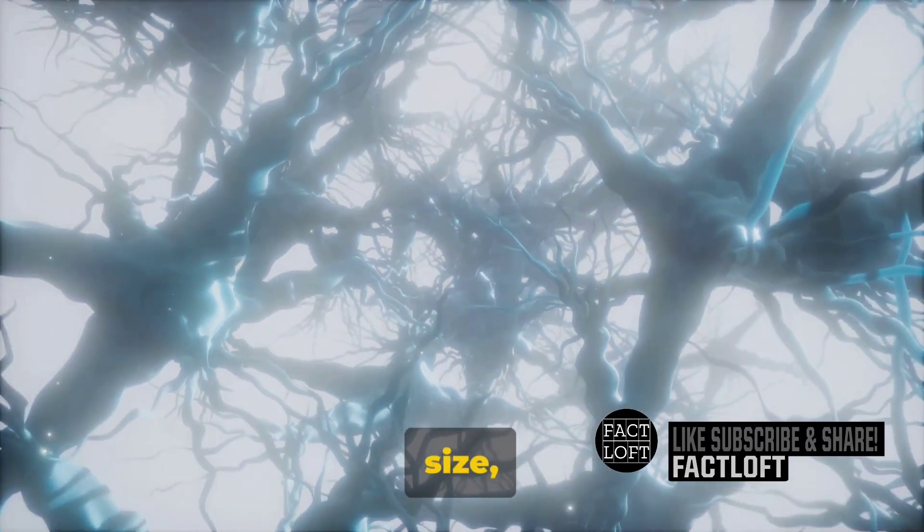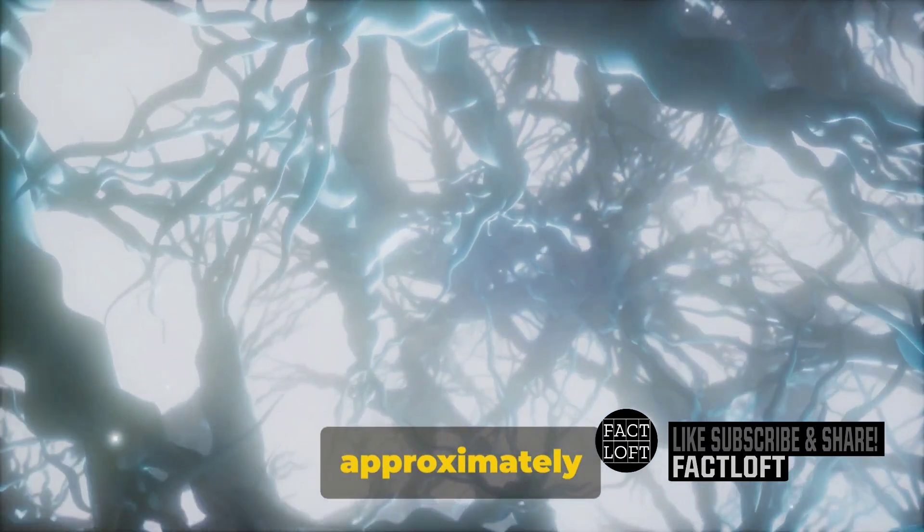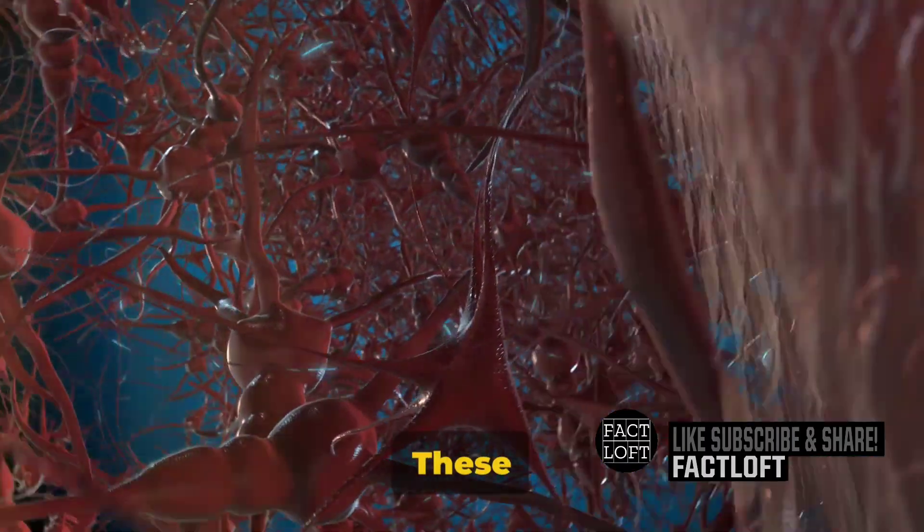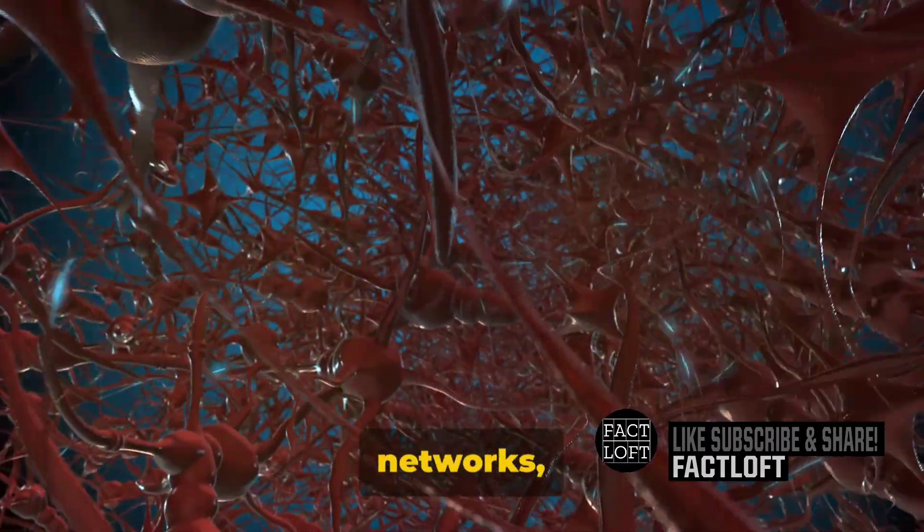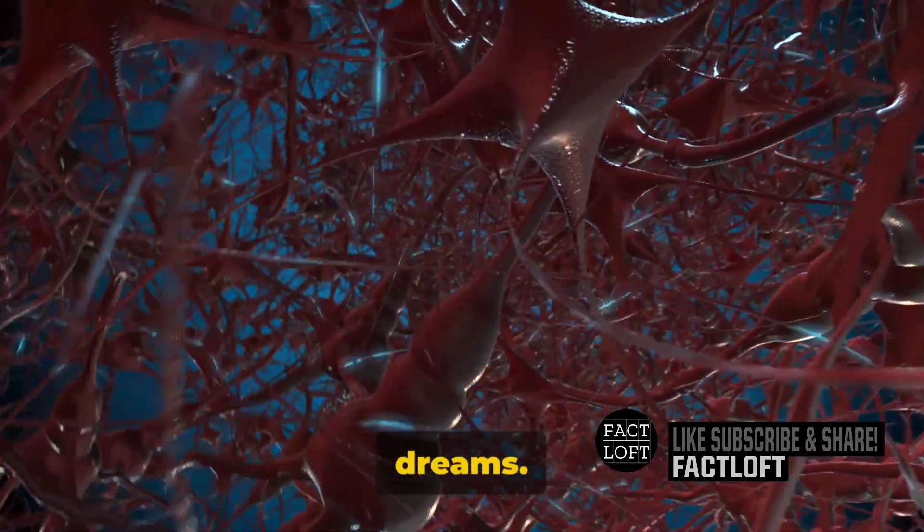Despite its relatively compact size, the human brain is a powerhouse of complexity, housing approximately 100 billion neurons. These neurons, through intricate networks, work round the clock, controlling everything from our heartbeats to our dreams.